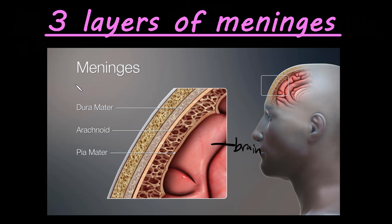An easy way to remember this is PAD — like if we were padding something, cushioning it. We're cushioning the brain and protecting it from injury, protecting the brain and spinal cord. So it's going to act as a pad, an extra padding. The layers from the inside going to the outside are as follows.